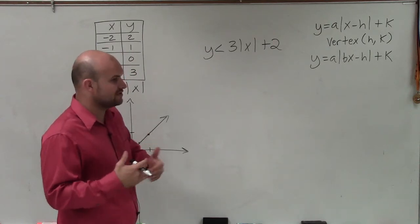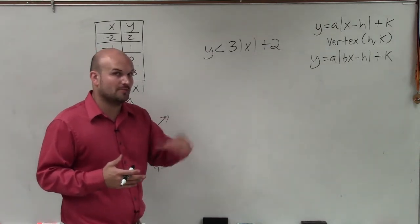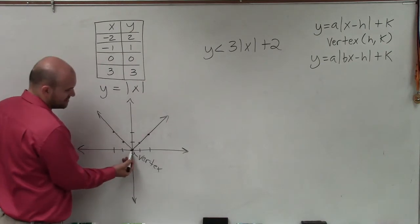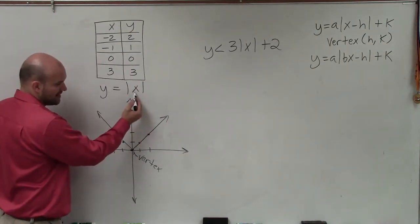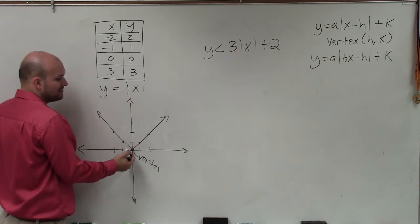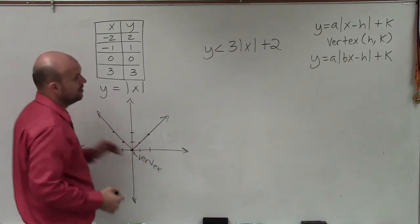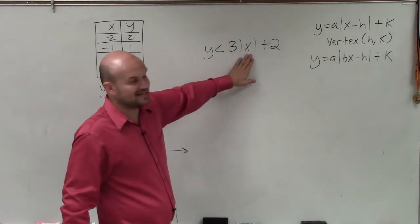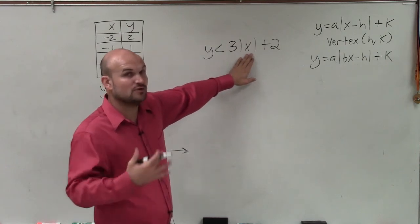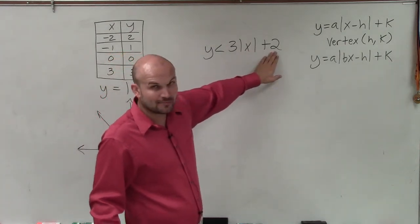But as far as the vertex, the vertex is going to be shifting left or right or up or down. Here's your vertex in the parent graph with no transformations. And our h and our k, if we have them, that's going to shift over our vertex. Well, we notice I'm not adding or subtracting anything inside the absolute value, so I'm not moving left or right. But I am going up two units.